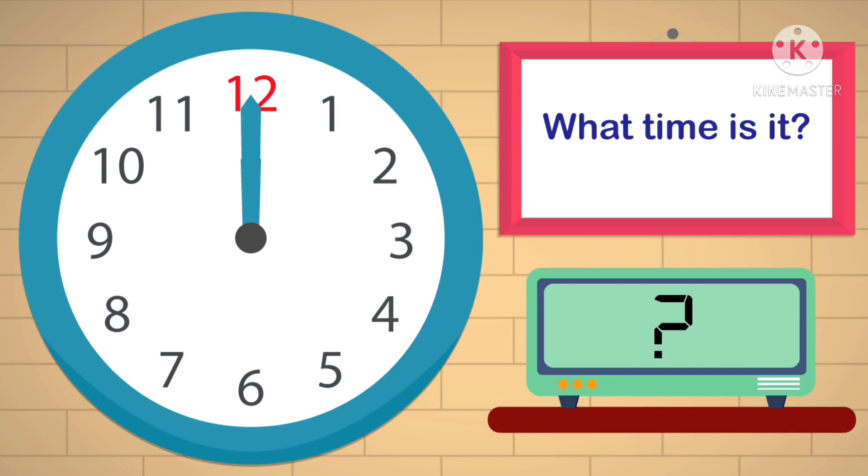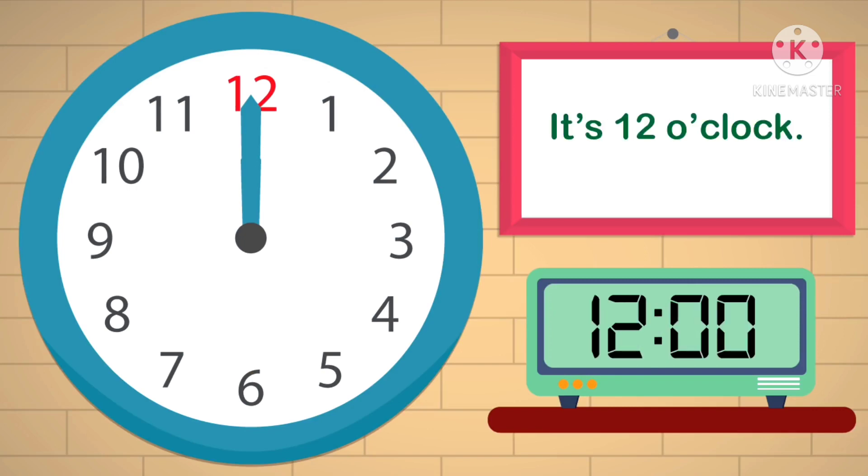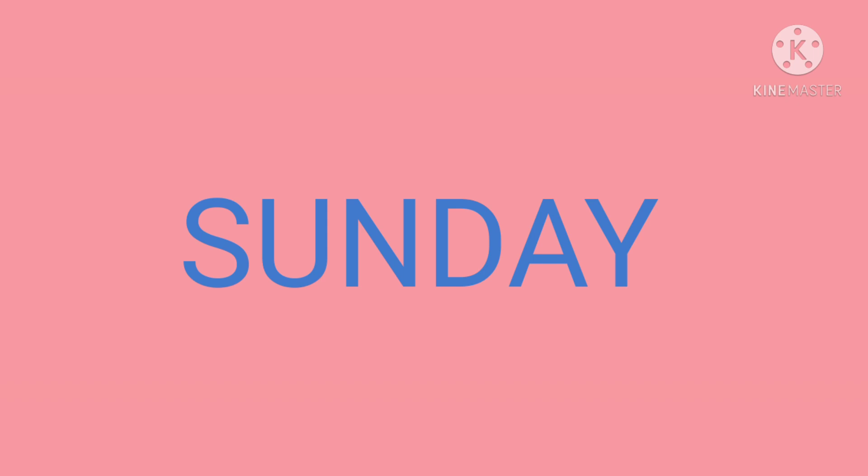Now, both the hands are at 12, so the time is 12 o'clock. There are 7 days in a week and they are Monday, Tuesday, Wednesday, Thursday, Friday, Saturday and Sunday. So, 1 week is equal to 7 days.